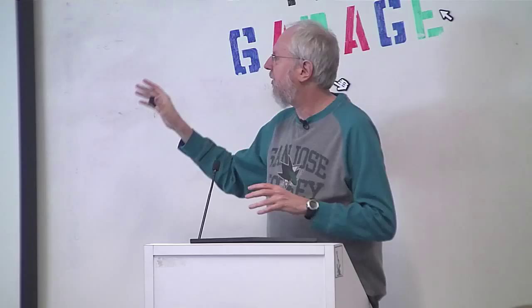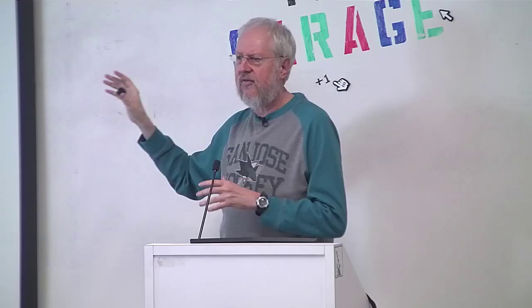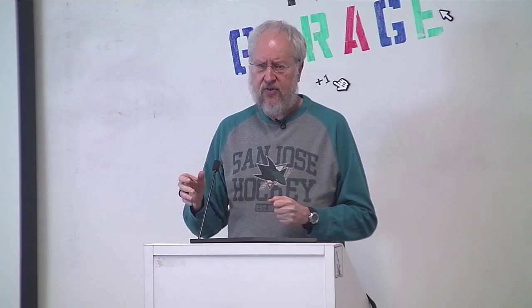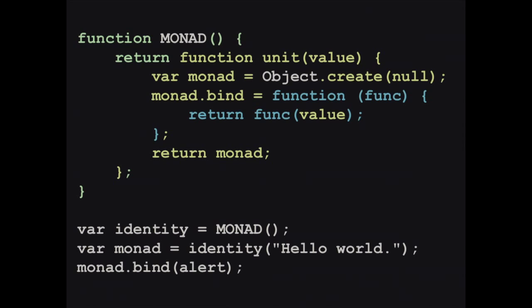We're going to use the macroid to define a monad, starting with the identity monad. The identity monad will build the identity constructor. We call the identity constructor passing it the 'hello world' string. And then when we call monad.bind passing the alert function as its method, we'll get the hello world output. So this is the simplest useful monad — the identity monad.